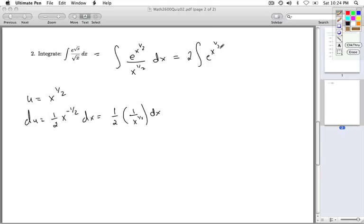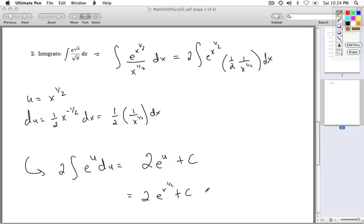I have e to the x to the 1 half times 1 half 1 over x to the 1 half dx. So I'm all set now in the land of u. I have 2 times the integral e to the u du, which is 2 e to the u plus c, which is 2 e to the x to the 1 half plus c, or 2 e to the square root x plus c.